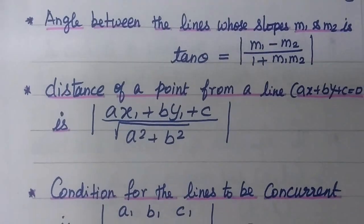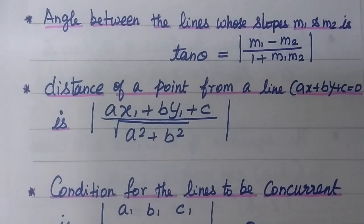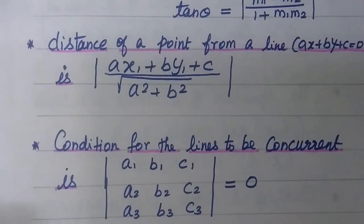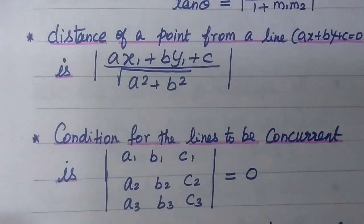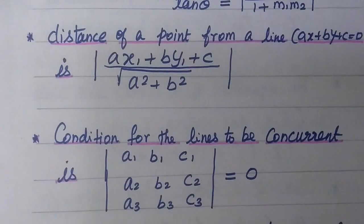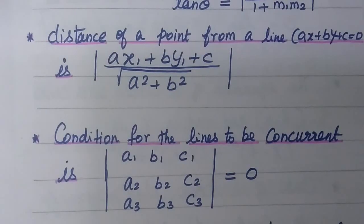And the next one: the condition for three lines to be concurrent is that the determinant with elements a1, b1, c1; a2, b2, c2; a3, b3, c3 equals zero. Two lines cut at one intersecting point; more than two lines cut at one point — that is concurrency. We have three lines and their point of concurrency.